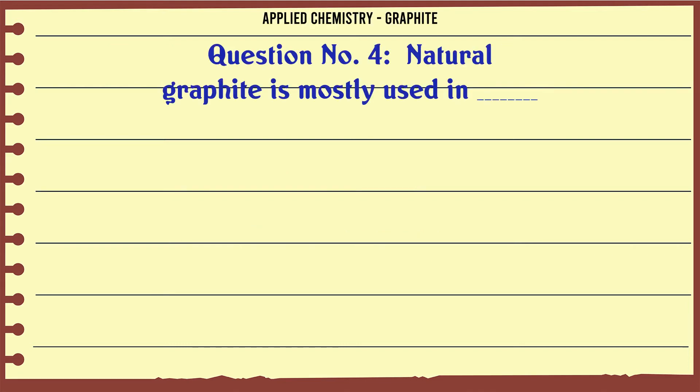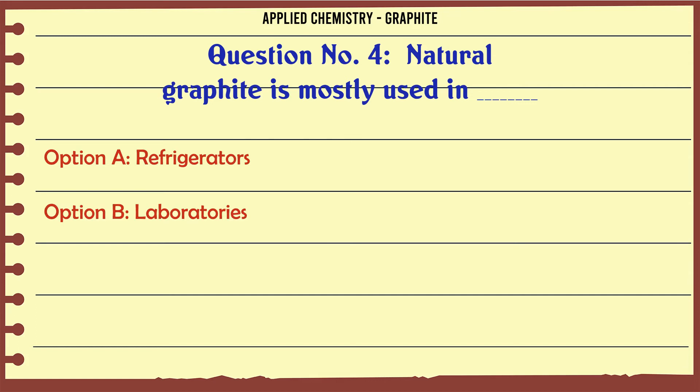Natural graphite is mostly used in. A. Refrigerators. B. Laboratories. C. Catalyst. D. Fuel.